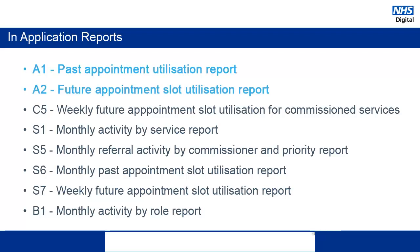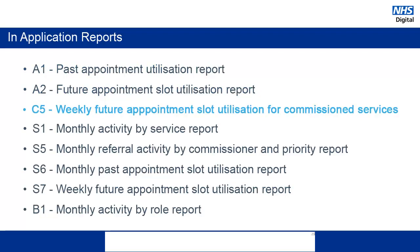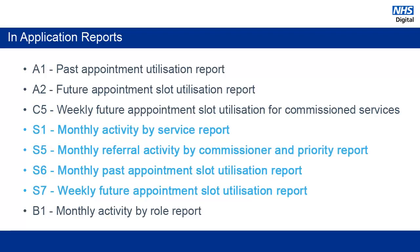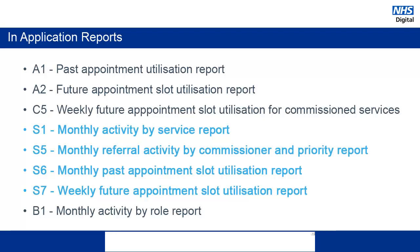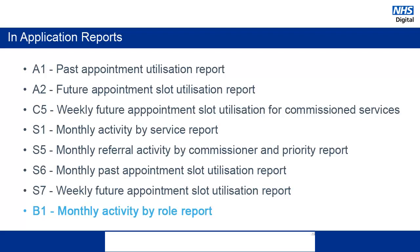The reports that start with the letter A are the Area Team reports. These give you an overview of the organisations within an ODS Area Team. The report starting with the letter C relates to a Commissioner Report. The reports starting with the letter S are Service Provider Reports. And the report starting with the letter B is designed for Booking Management Service Reporting.